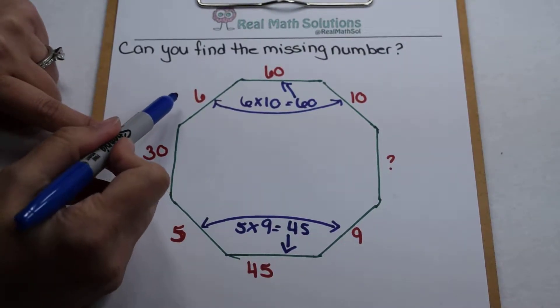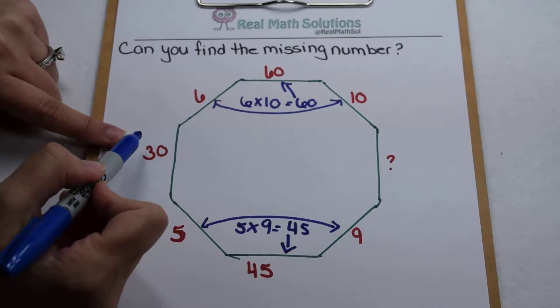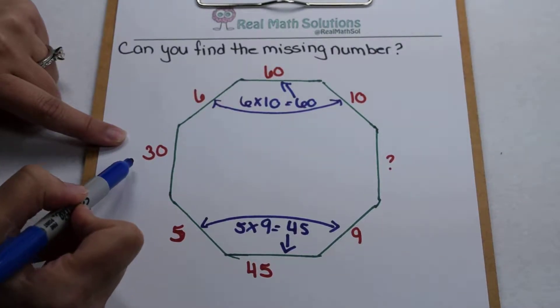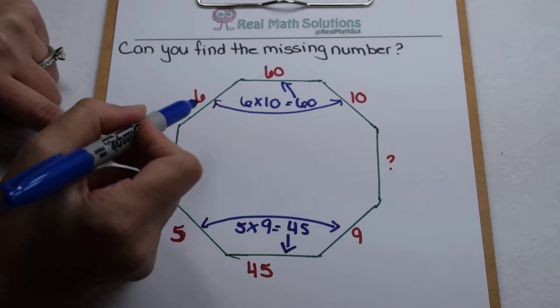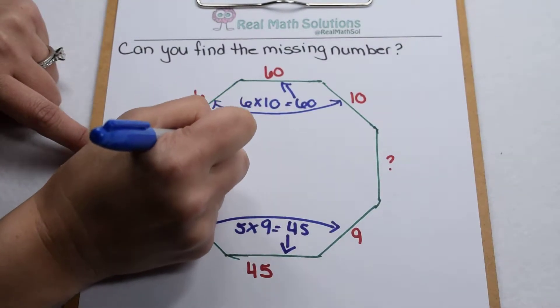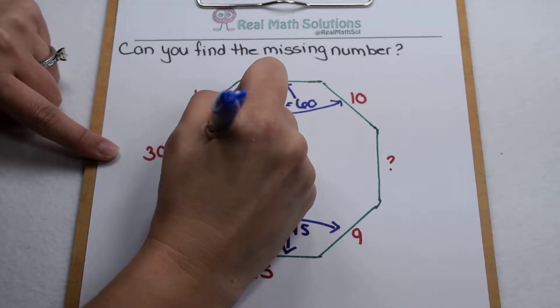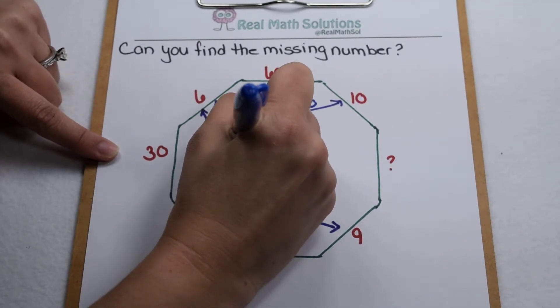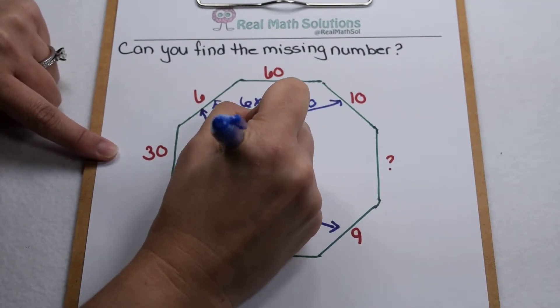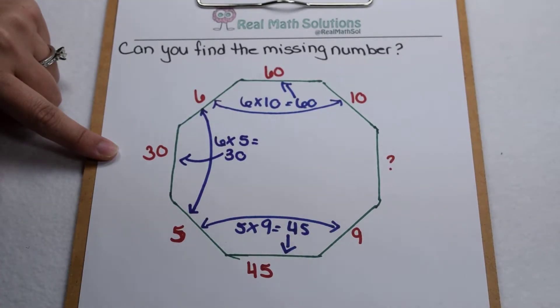So if I look at this combination, 6 times 5 gives me 30. 30 divided by 6 gives me 5. So again, we could see there's a combination amongst these values. If I rearrange that, I could say that it's 6 times 5, that gives me 30, which is this number here.